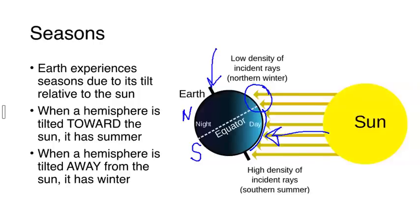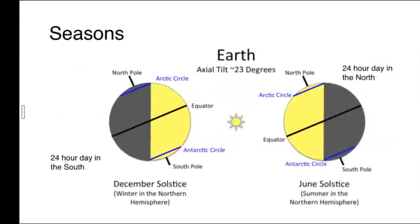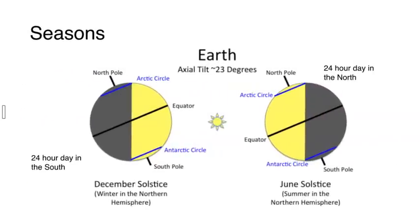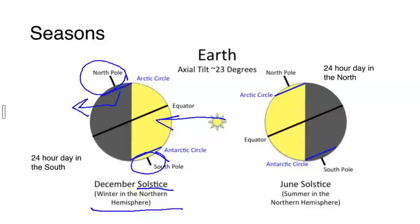We can tilt the northern hemisphere toward the sun and then we'll be experiencing our summer in the United States during June, July and August. During the December solstice around December 21st, we have a day in the southern hemisphere that is going to be 24 hours of daylight, due to that higher amount of sun exposure at the south pole.